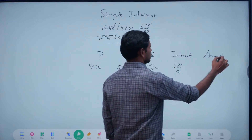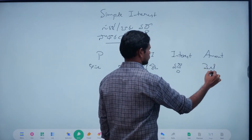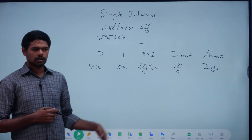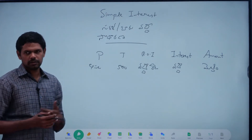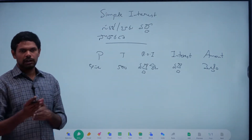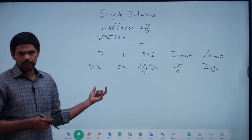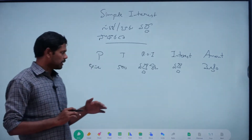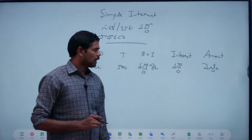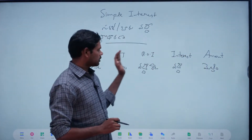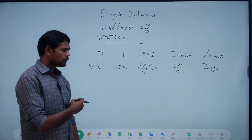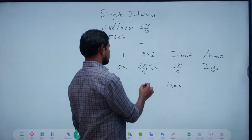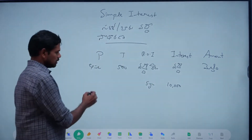Amount. We have 4 terms to discuss — the amount. Interest is the key term. What is constant? The rate of interest is constant. Suppose I have 5% interest — rate of interest is 5%.